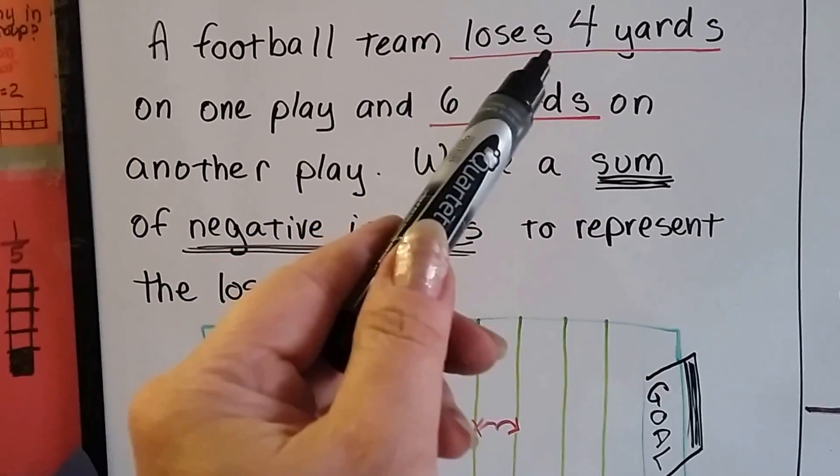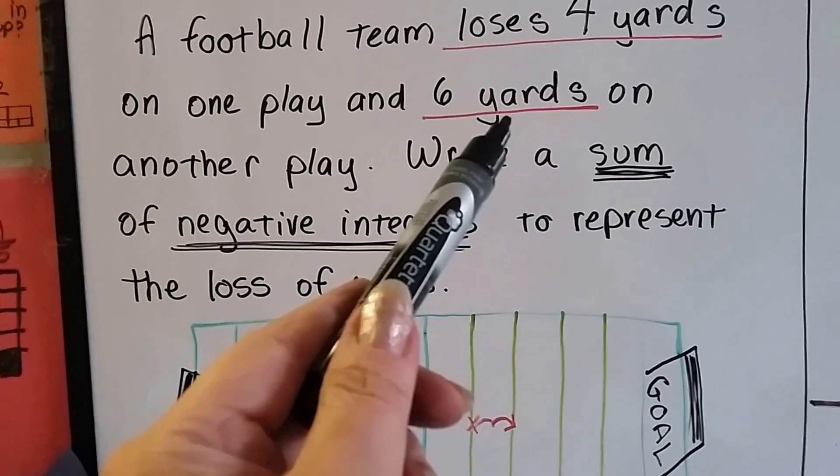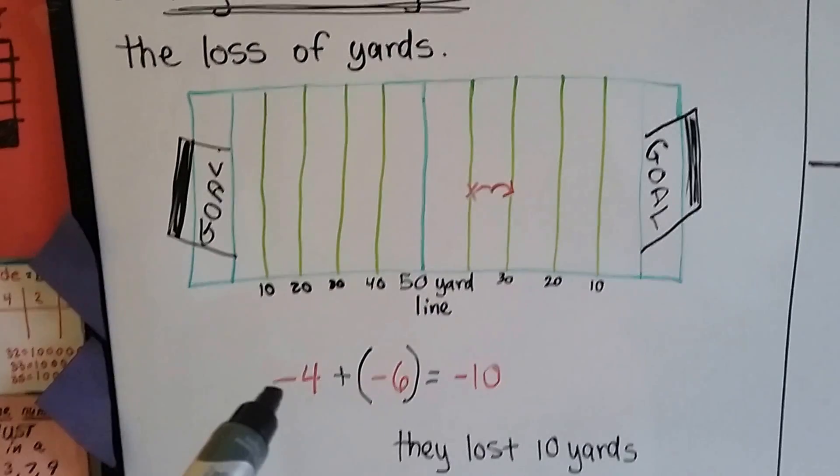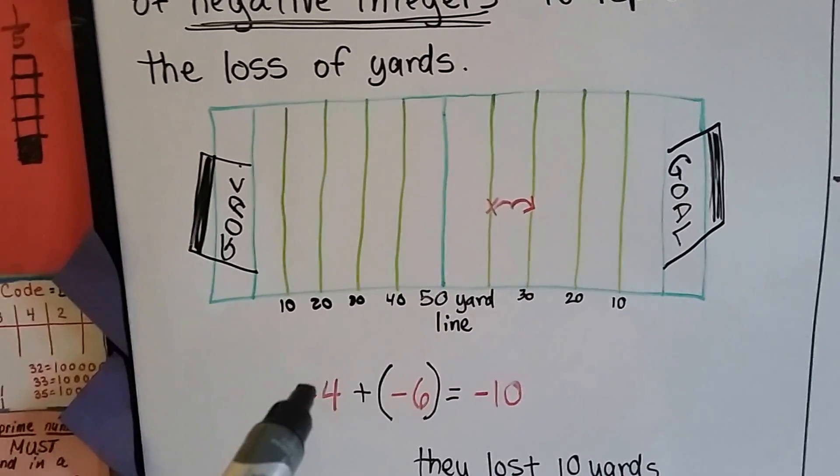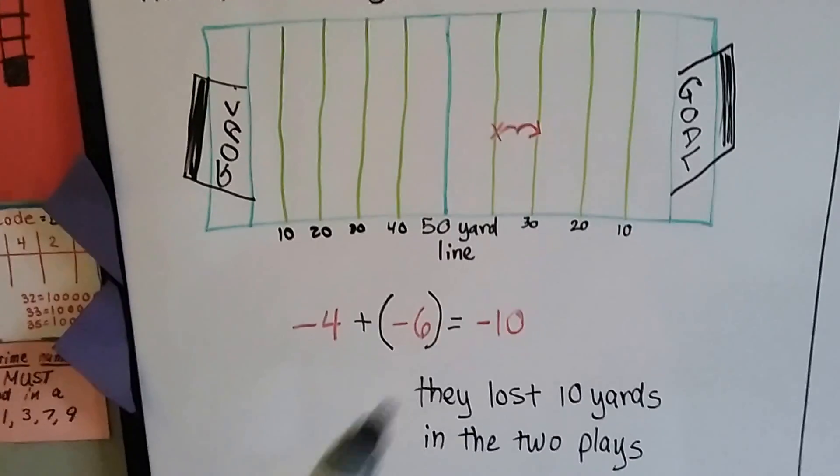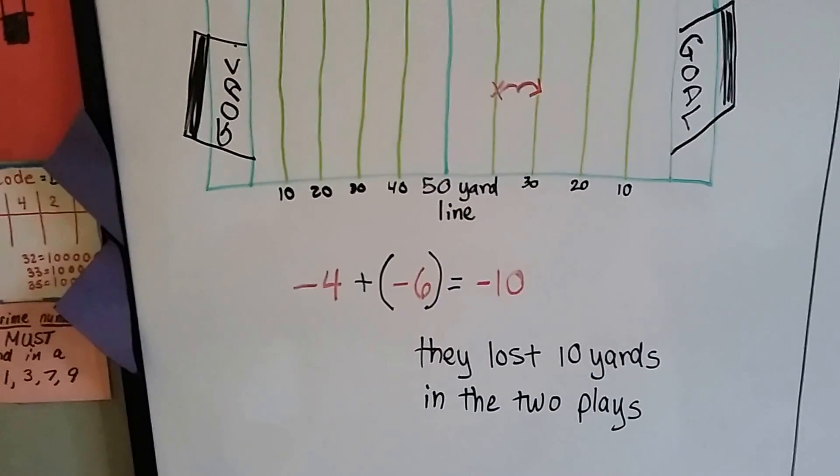So if this is a loss of four yards and a loss of six yards, that means we're going to have a negative four added to a negative six and negative four plus negative six would be a negative ten. They lost ten yards in the two plays.